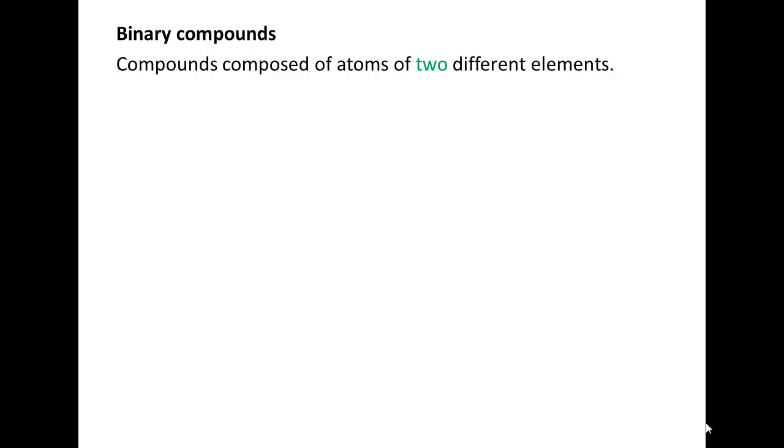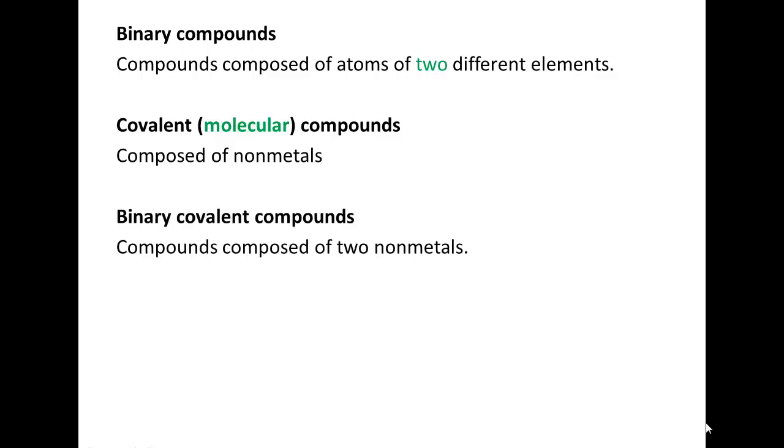So it's made up of two different elements. And then a covalent compound, also known as molecular compound, that's composed of only nonmetals. So if we combine those two terms, we get what is called a binary covalent compound. That's a compound composed of two different nonmetals. And that's what we're going to be naming today.